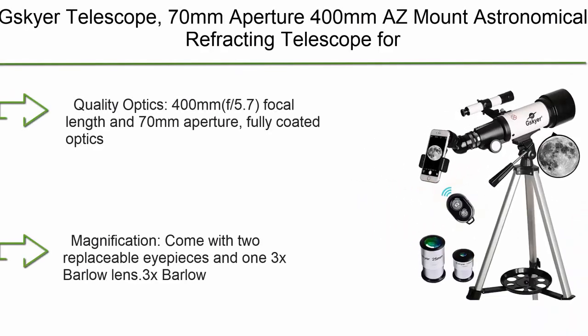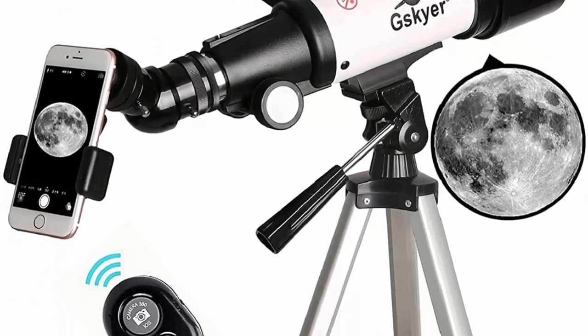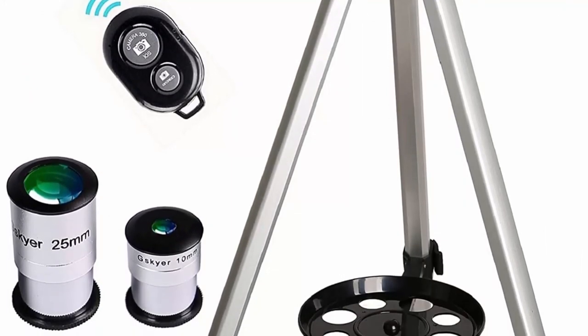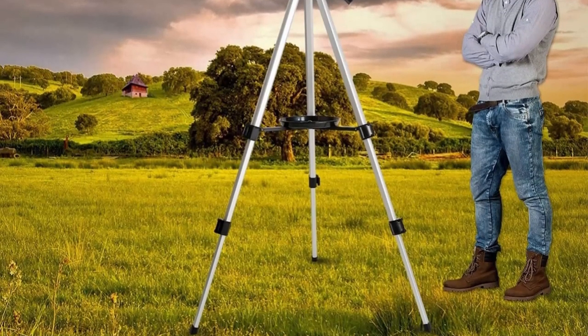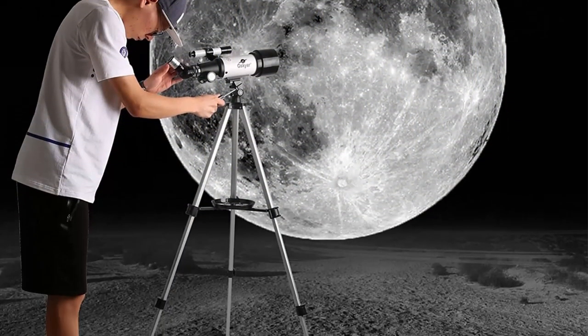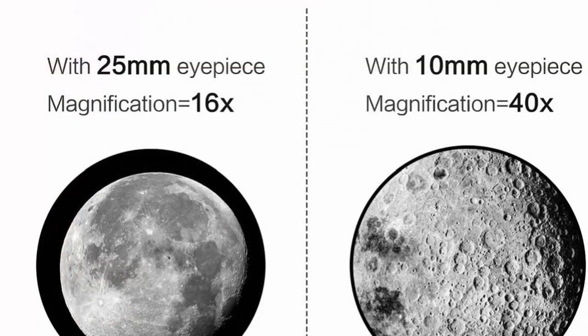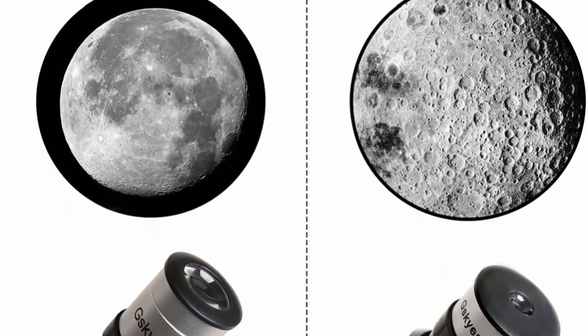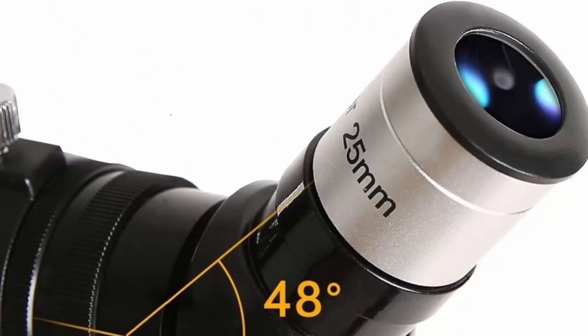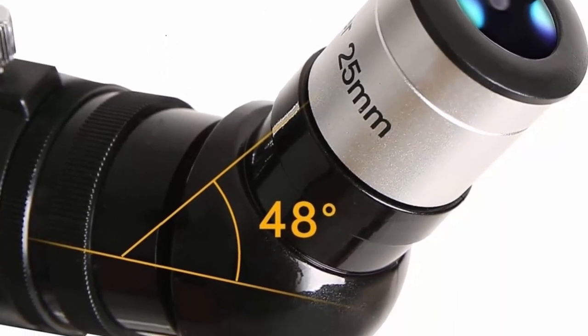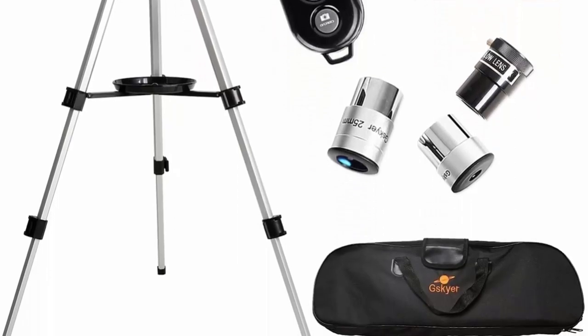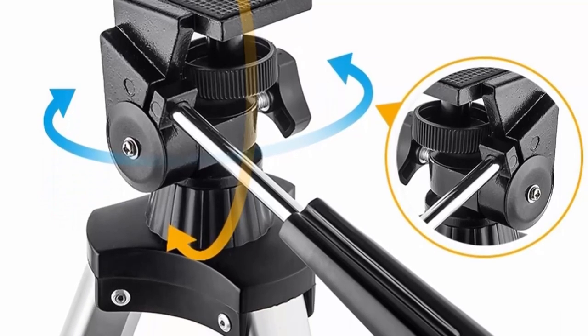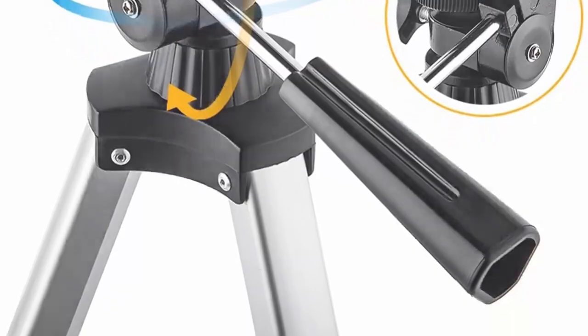Top 2. G-Skyer Telescope 70mm Aperture 400mm AZ Mount Astronomical Refracting Telescope for Kids Beginners. Travel Telescope with Carry Bag, Phone Adapter and Wireless Remote. Quality Optics. 400mm f/5.7 focal length and 70mm Aperture. Fully coated optics glass lens with high transmission coatings create stunning images and protect your eyes. Perfect telescope for astronomers to explore stars and moon. Magnification. Come with two replaceable eyepieces and one 3x Barlow lens. 3x Barlow lens trebles the magnifying power of each eyepiece. 5x24 finder scope with mounting bracket and crosshair lines inside make locating objects easily. Wireless Remote. Free includes one smartphone adapter and one wireless camera remote to explore the nature of the world easily through the screen and take amazing celestial images.